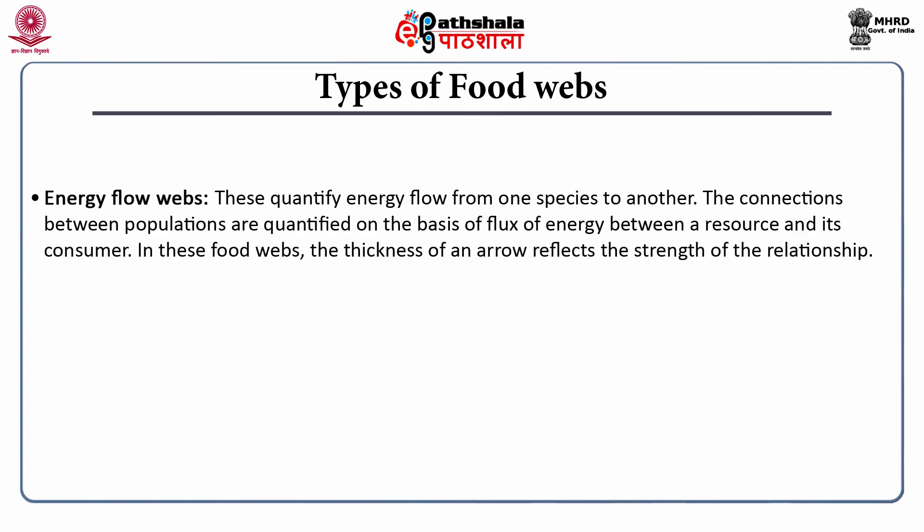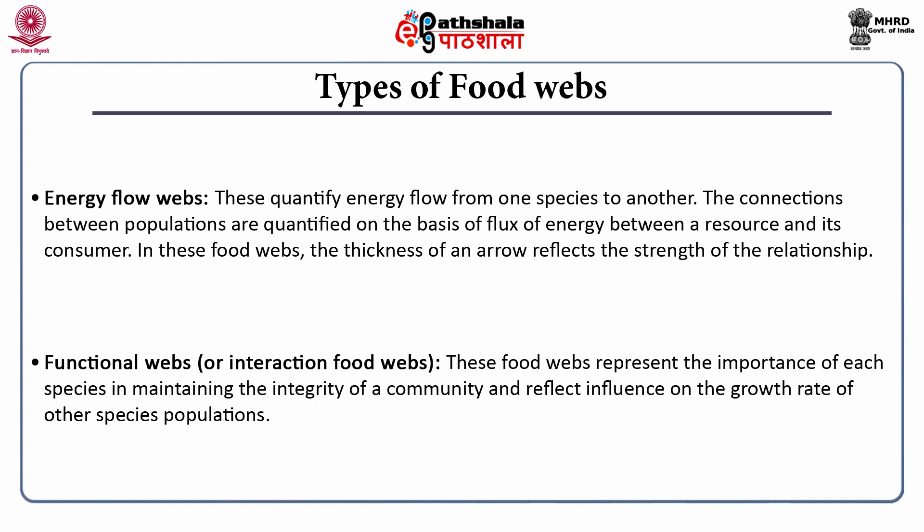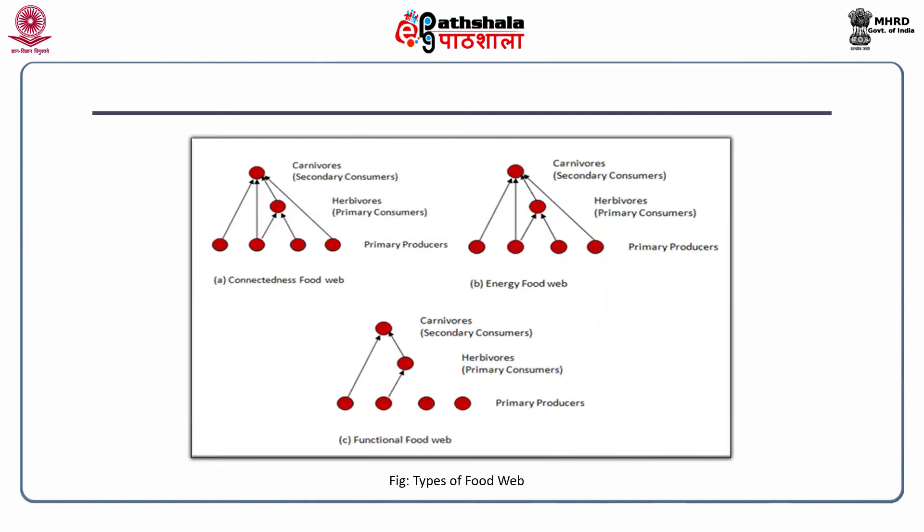Second, energy flow webs quantify the energy flow from one species to another. The connections between populations are quantified on the basis of flux of energy between a resource and its consumer, and the thickness of an arrow reflects the strength of the relationship. Third, functional webs or interaction food webs represent the importance of each species in maintaining the integrity of a community and reflect influence on the growth rate of other species' populations. This figure shows the three types of food webs: connectedness food webs, energy food webs, and functional food webs.